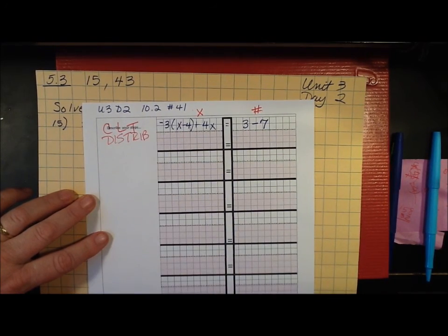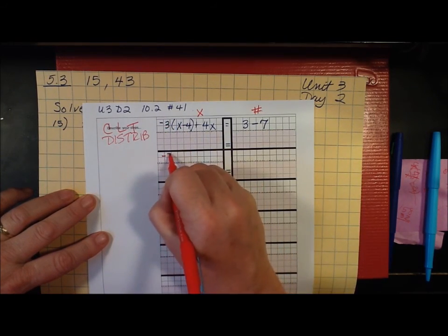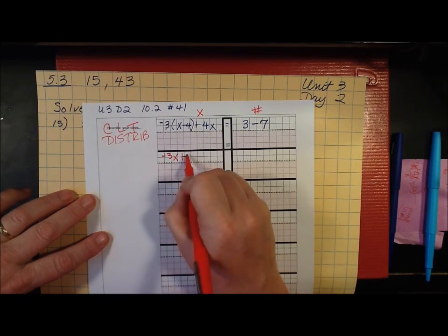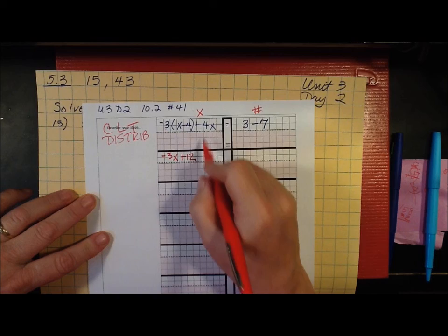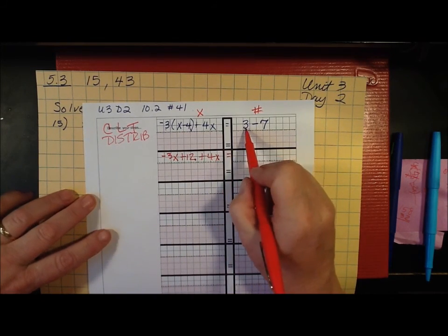I guess I better distribute first. So negative 3 times x would be negative 3x. Negative 3 times negative 4 would be positive 12 plus 4x equals... Let's take care of this now.